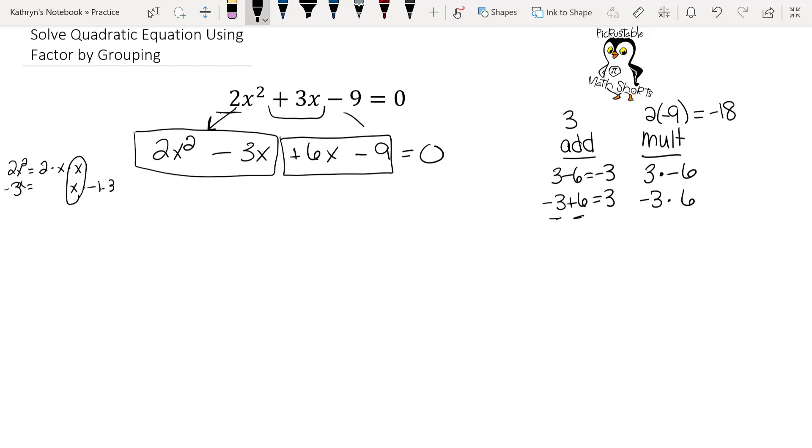So it looks like our greatest common factor is going to be x. So we're going to write an x and a parenthesis. I'm going to erase my little box here. Now we're going to divide each piece from that box by x. So 2x squared divided by x is 2x. Negative 3x divided by x is negative 3.